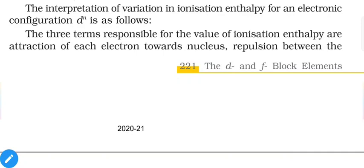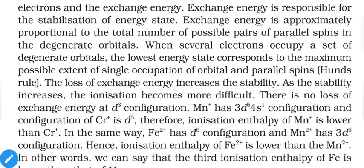The interpretation of variation in ionization enthalpy for dⁿ configuration involves three terms: the attraction of each electron towards the nucleus, the repulsion between electrons, and the exchange energy. Exchange energy is responsible for the stabilization of the energy state and is approximately proportional to the total number of possible pairs of parallel-spin electrons in degenerate orbitals.